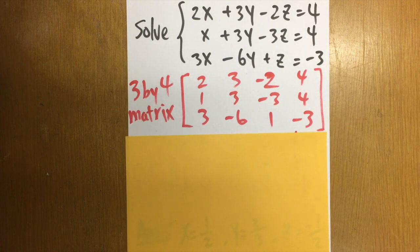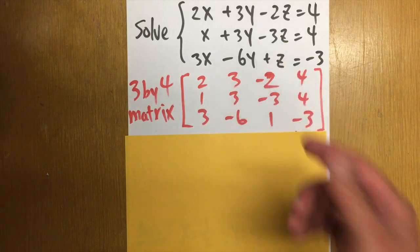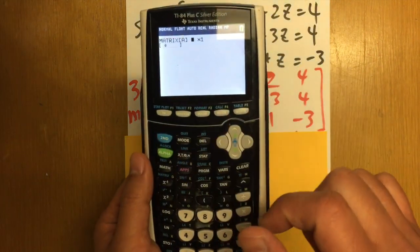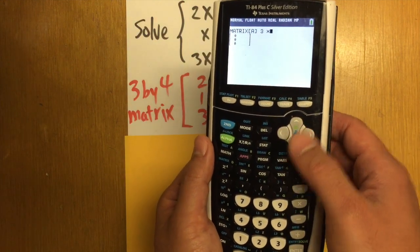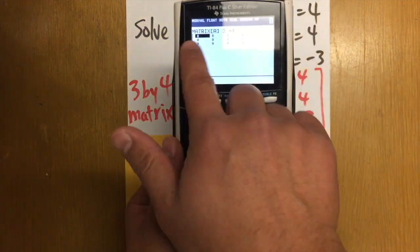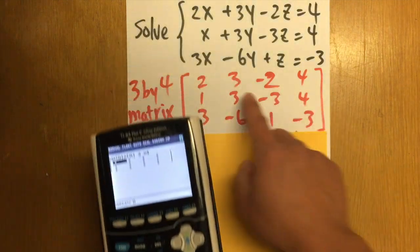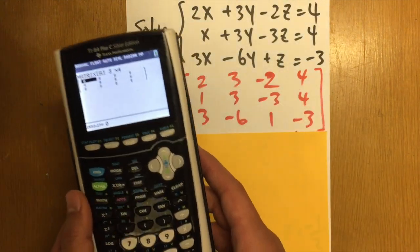This is a 3x4 matrix. And this is the one that we have to enter onto matrix A. First, we are going to make sure we write this down as 3x4. And then we just have to fill in these numbers.